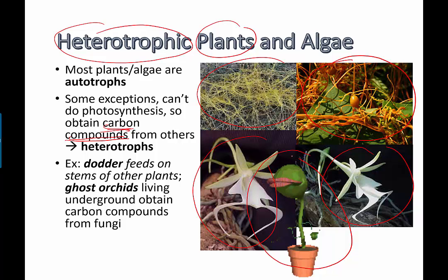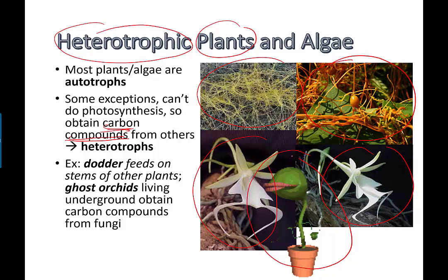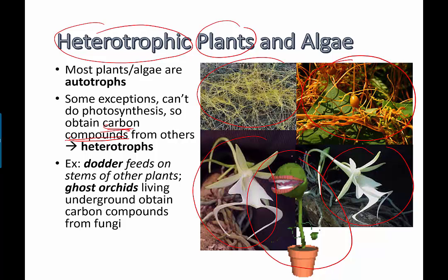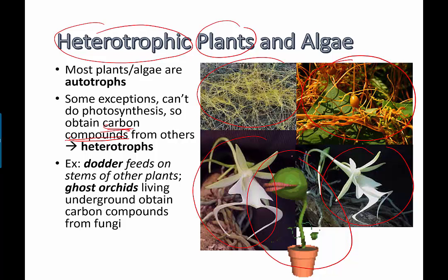So most plants are autotrophic — photosynthesis is their primary means of getting energy to make food — but there are some heterotrophic plants. Just a little sidestep from everything else we've been looking at.